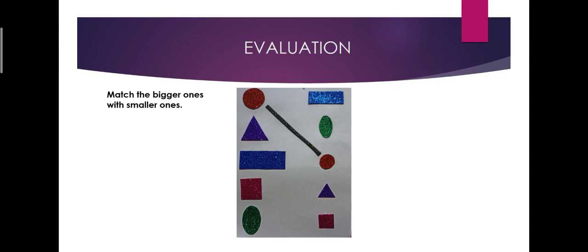Then evaluation: match the bigger ones with smaller ones. Here I prepared these shapes with glitter paper. Not only this matching, again you have to give the problems. For example, find the area of the rectangle having the length of five centimeters and breadth of three centimeters. Like that, we have to ask some more problems for finding the area of rectangle.